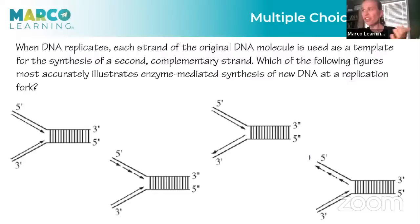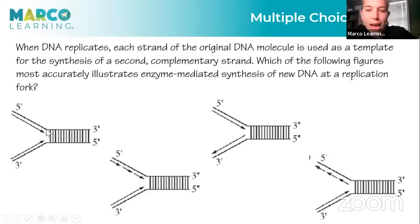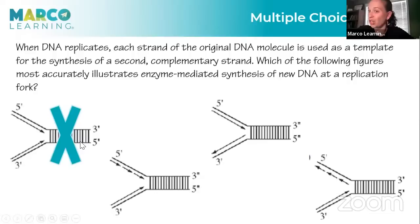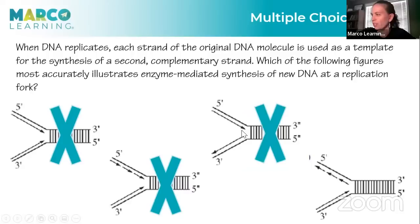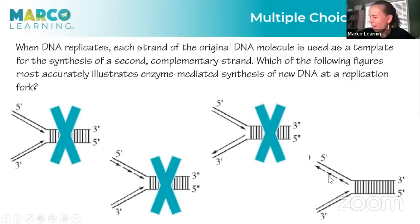Practice question on DNA replication: which illustrates the enzyme-mediated synthesis of a new strand? You have to read DNA 3' to 5' and synthesize it 5' to 3'. The first option is making DNA 3' to 5', which is wrong. Another shows synthesis in fragments but also 3' to 5' — still wrong. The correct answer is the one where synthesis goes 5' to 3' throughout, including the Okazaki fragments on the lagging strand, which are also made 5' to 3'.